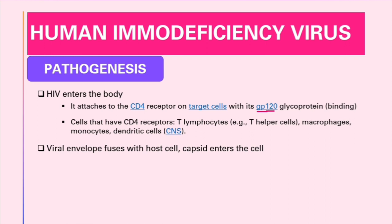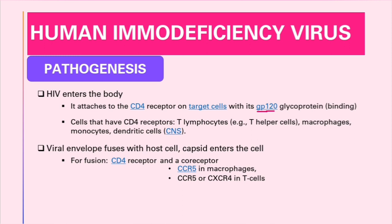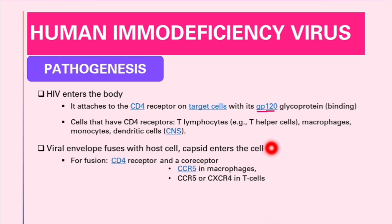For the viral envelope to fuse with the host cell and allow the capsid to enter, we need two things: the CD4 receptor and a co-receptor. The main co-receptors are CCR5, particularly in macrophages, and CCR5 or CXCR4 in T cells. Individuals who lack CCR5 are resistant to HIV. Those with a homozygous mutation have substantial resistance, while those with a heterozygous mutation have a slow course of infection.